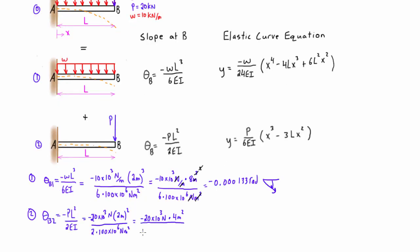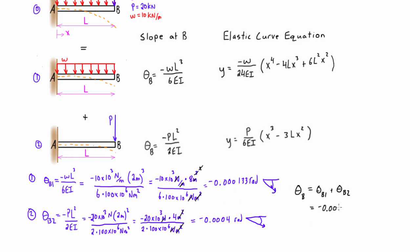For system two, the slope equation reduces similarly. Checking units: newtons cancel with newtons, meters squared cancels meters squared, leaving radians. Since we're pushing down again, we expect the slope to go clockwise off the axis. For the actual system, the total slope is just the sum of the two, which equals negative 0.000533 radians.